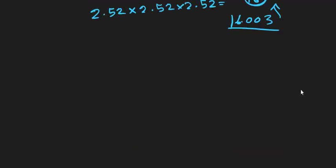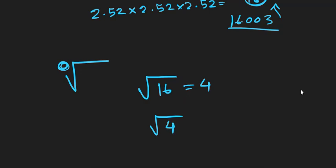Now, when there is no number in the root symbol, it simply means this is a square root. For example, if I write the root of 16, that means this is the square root of 16, and the square root of 16 is 4. And the square root of 4 is 2.